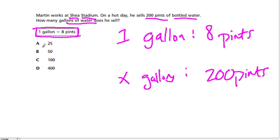If we look at our choices right here, we can even deduce what options make sense and what don't. If 200 pints of bottled water are being sold, there's no way that could be 400 gallons, because one gallon represents eight pints. So 200 pints of water has to be a smaller amount of gallons than 200.